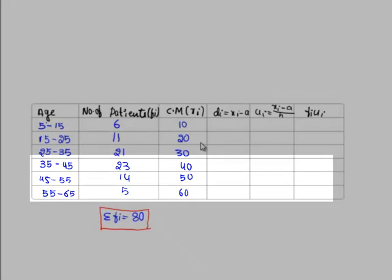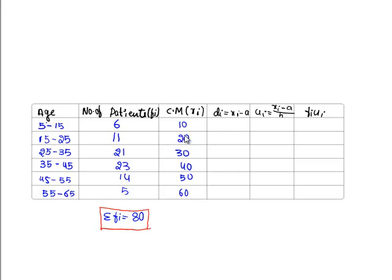As the Xi values were large, we shall make it smaller by taking an assumed mean. Here we shall take the assumed mean as 40.